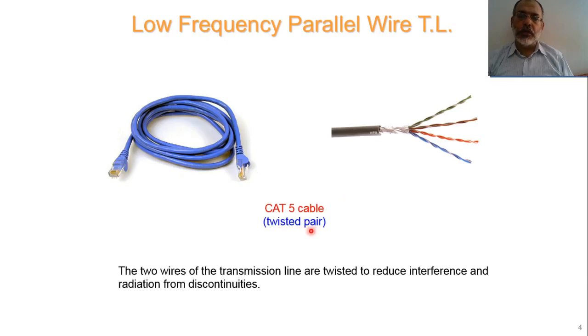This twisting is used to reduce the interference and radiation from the discontinuities of the transmission line.